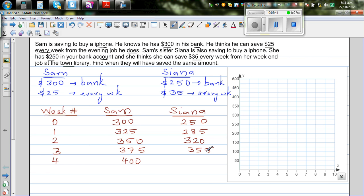$355 plus $35 is $390. And the fifth week, he has $425. And this is $425. So this is one way of doing it. You can do it by making up a table. In the fifth week, they have saved the same amount.